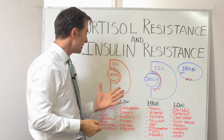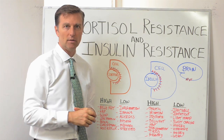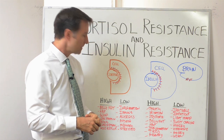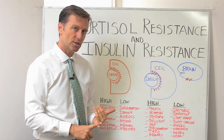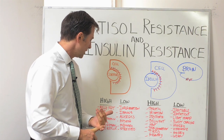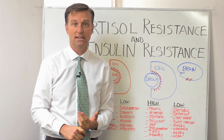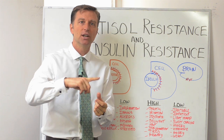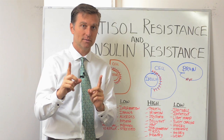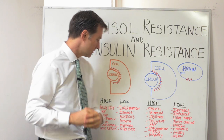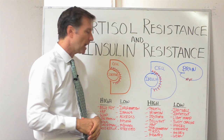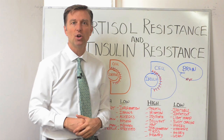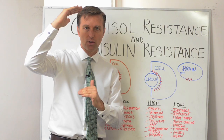Here are the symptoms of high cortisol — this is kind of like stage one. You have belly fat, high blood pressure, poor sleep, and loss of protein: muscle, hair, skin, collagen, joints, discs, and bone. A lot of your protein matrix is bone. Also high cholesterol, low vitamin D levels, acid reflux, even an ulcer. Those are all symptoms of high cortisol.